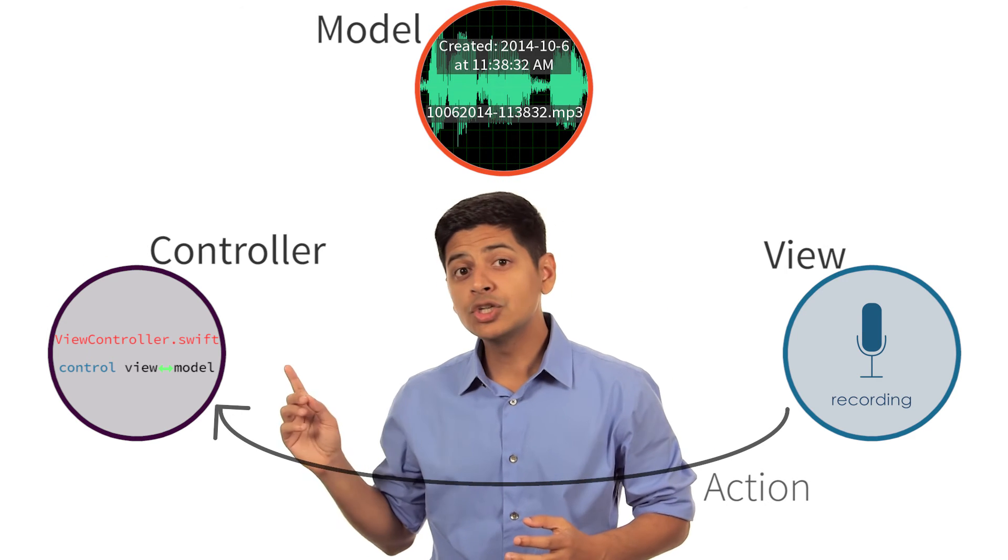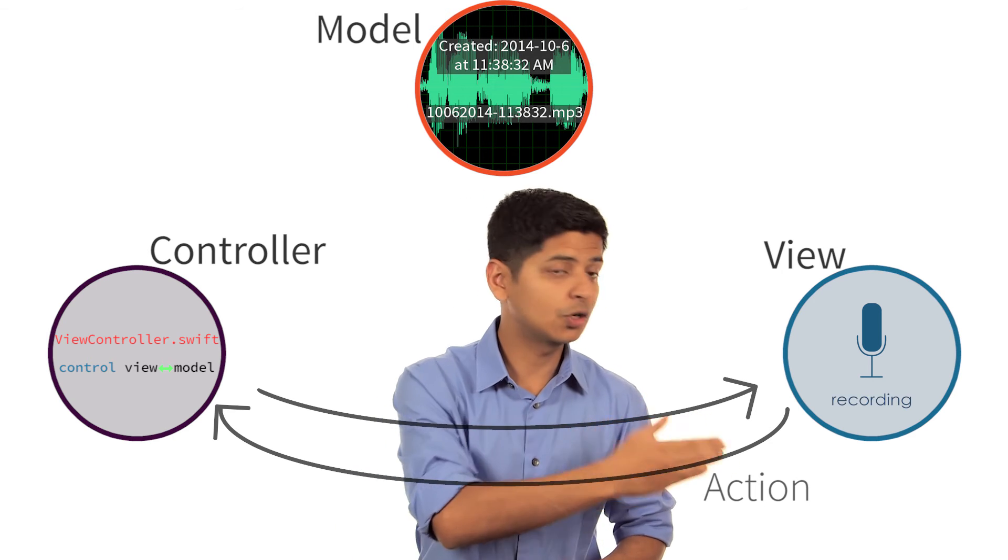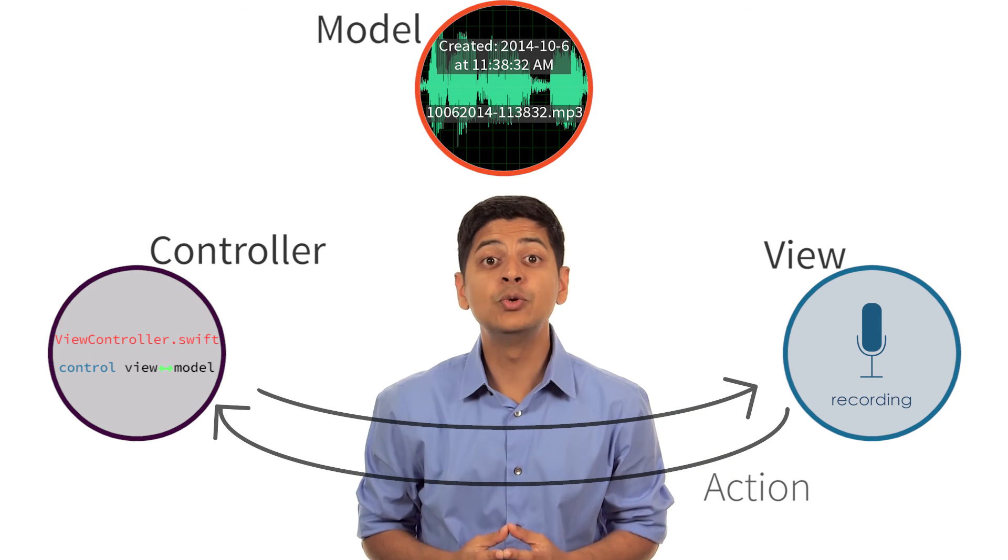Also, when a controller wants to change something in a view, like show and hide this recording in progress label, it uses an outlet.